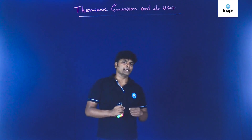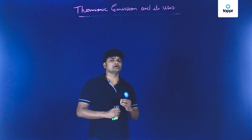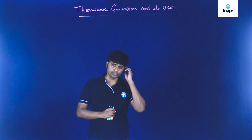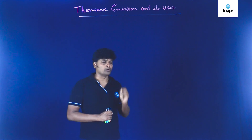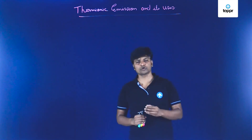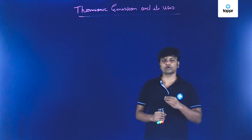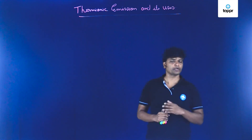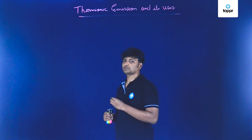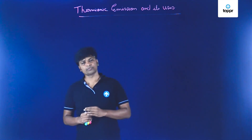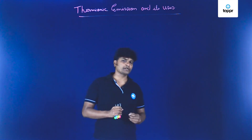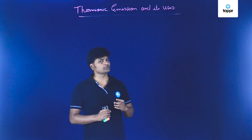In an atom we have a nucleus at the center and electrons revolve around the nucleus in many orbits. We have some electrons in the first orbit, some in the second orbit, and some in the third orbit and so on. The electrons in the first orbit are very highly attracted towards the nucleus. However, as we go away from the nucleus, the electrons in the outermost orbit are very weakly attracted towards the nucleus.